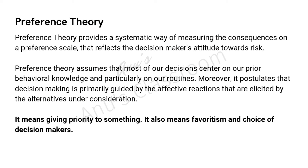Coming to preference theory. Preference theory provides a systematic way of measuring the consequences on a preference scale which reflects the decision maker's attitude towards risk. It assumes that most of our decisions center on our prior behavioral knowledge and particularly on our routines. For example, if I sleep at 10 o'clock every night, I will not go for a second show that starts at 9. Naturally, if I am planning to go out, I will try to come back by 10. My decision is going to be centered around that one preference of mine. Or if I am a vegetarian, my hotel choices and dish orders will all center around that.